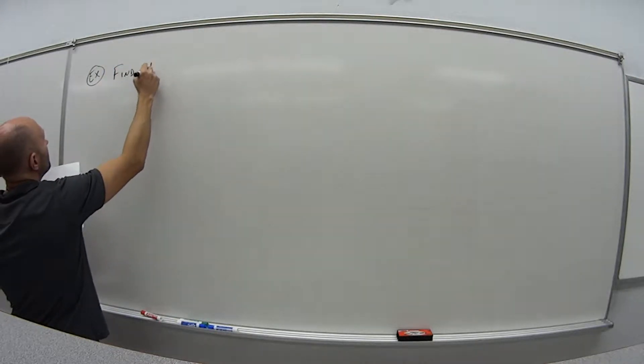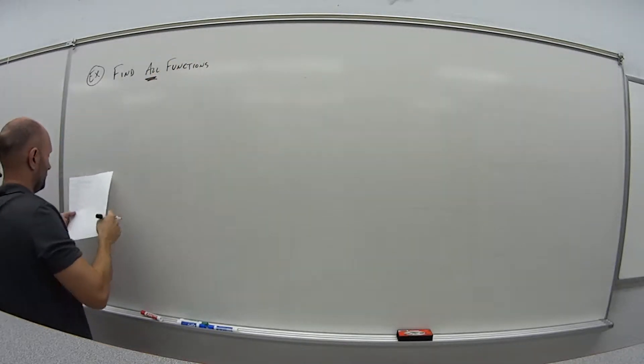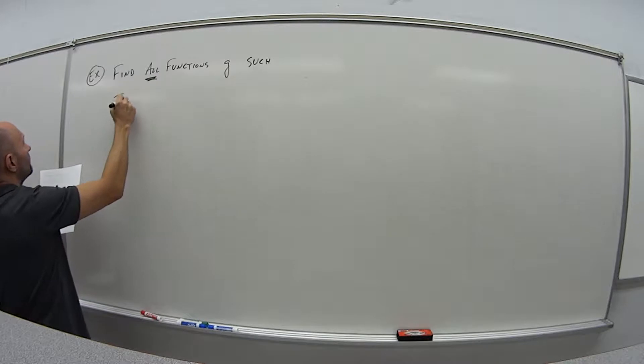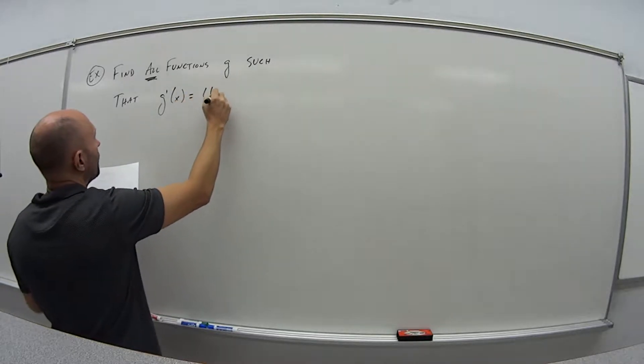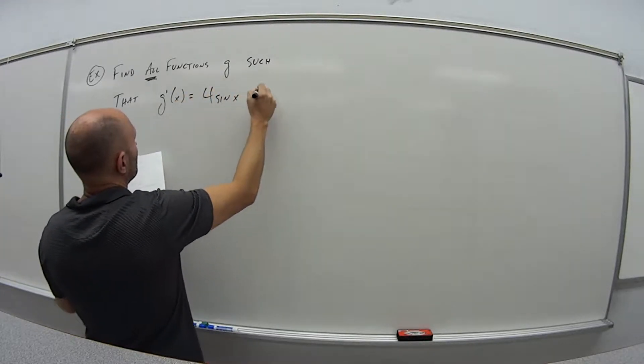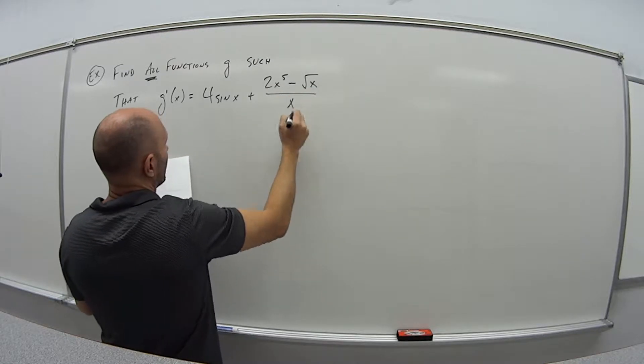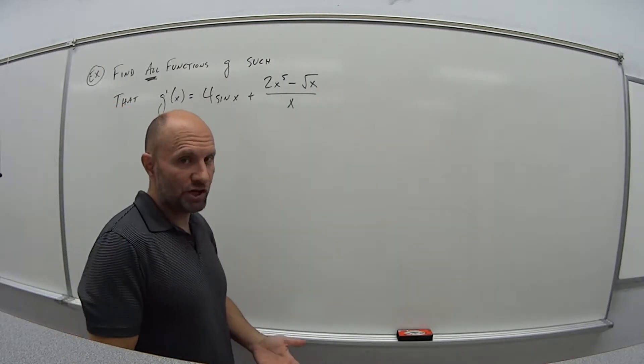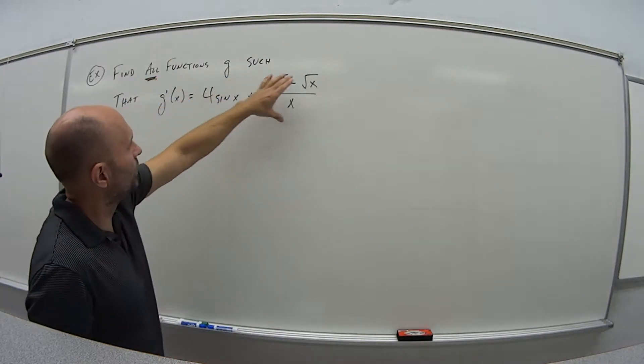So first example, let's say we want to find all functions g, and the key here is all, and we'll see what that means later. But all functions g such that g prime of x is equal to 4 sine of x plus 2x to the fifth minus the square root of x all over x. So we have the derivative g prime, we want to find the antiderivative. What was the main function that if I took the derivative would give me this guy?